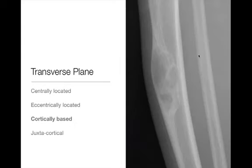Cortically based lesions are lesions that arise from the cortex of the bone. These can be difficult sometimes to tell apart from an eccentrically located lesion — they may overlap a little bit in appearance. But in this case, this is a good example of a cortically based lesion.